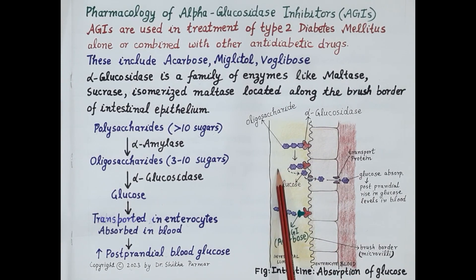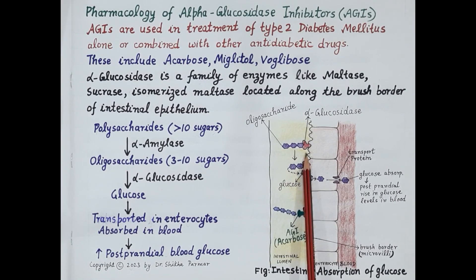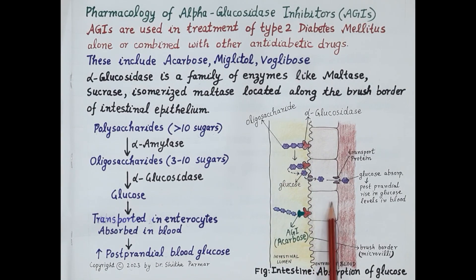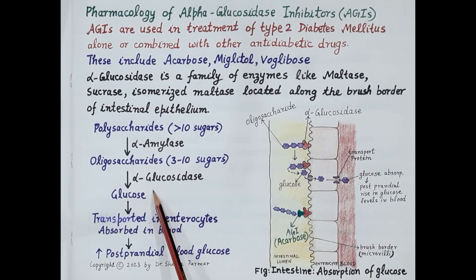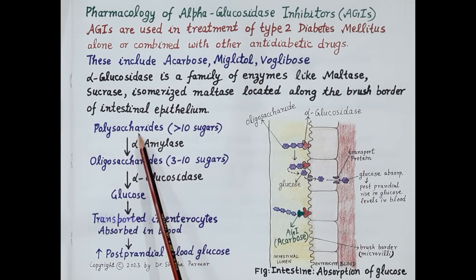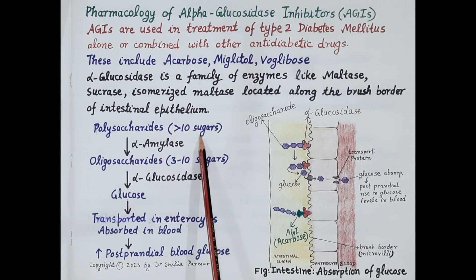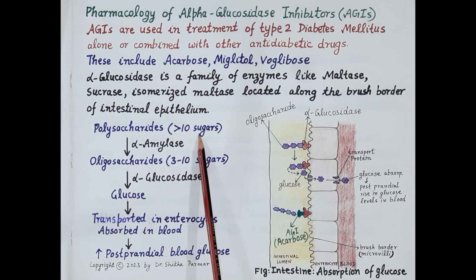Partially digested food from the stomach passes into the lumen of the small intestine. The alpha-glucosidase enzymes located along the brush border of these intestinal epithelial cells break down carbohydrates. Carbohydrates like starch are present in food as polysaccharides, composed of more than 10 glucose molecules.